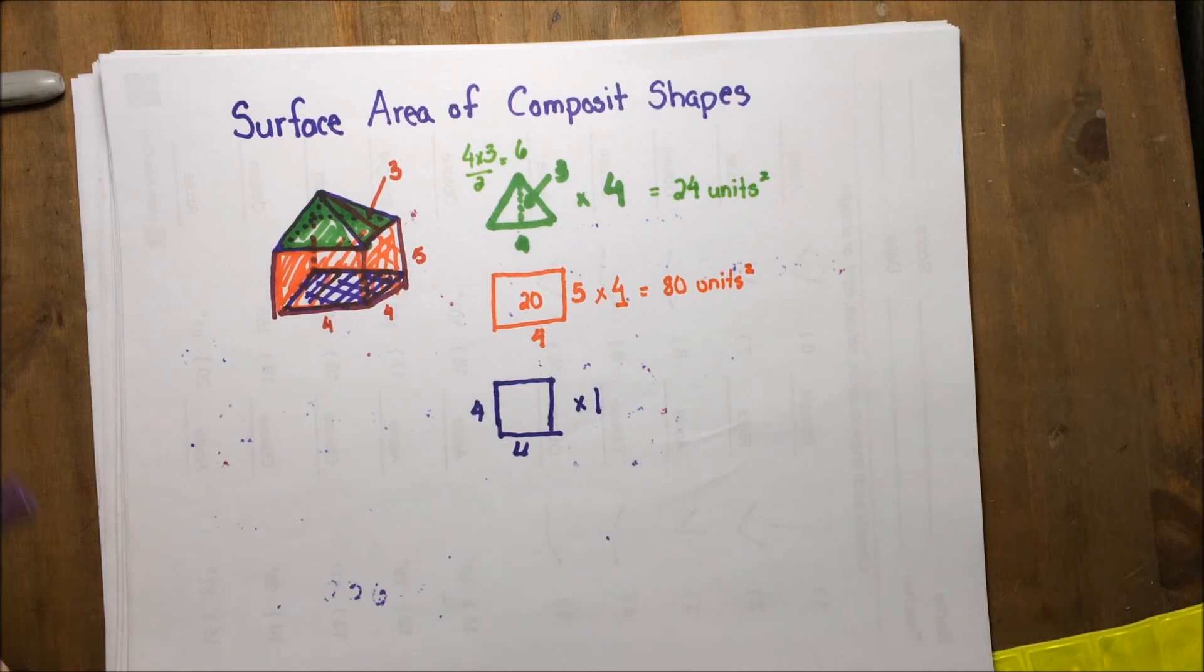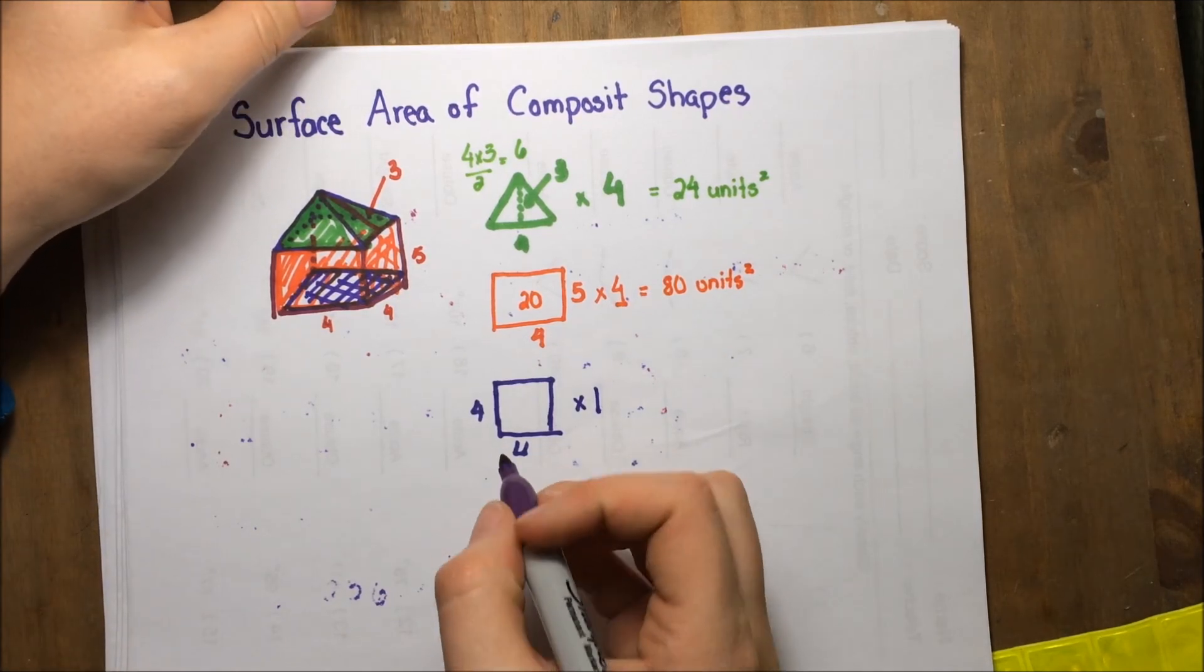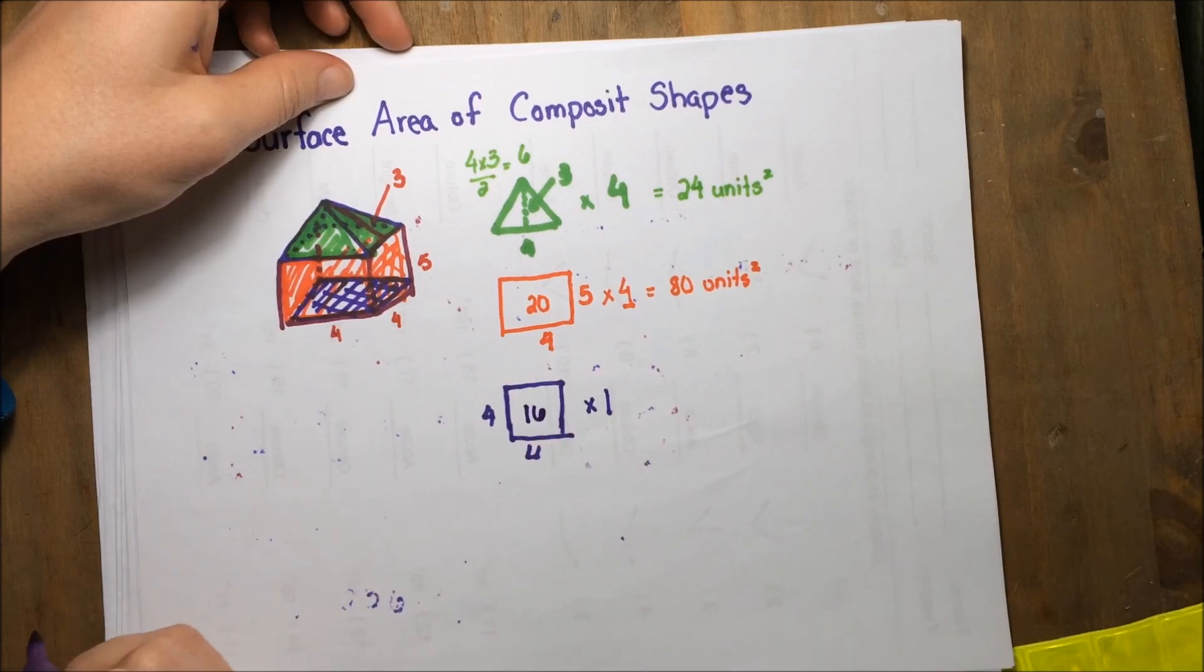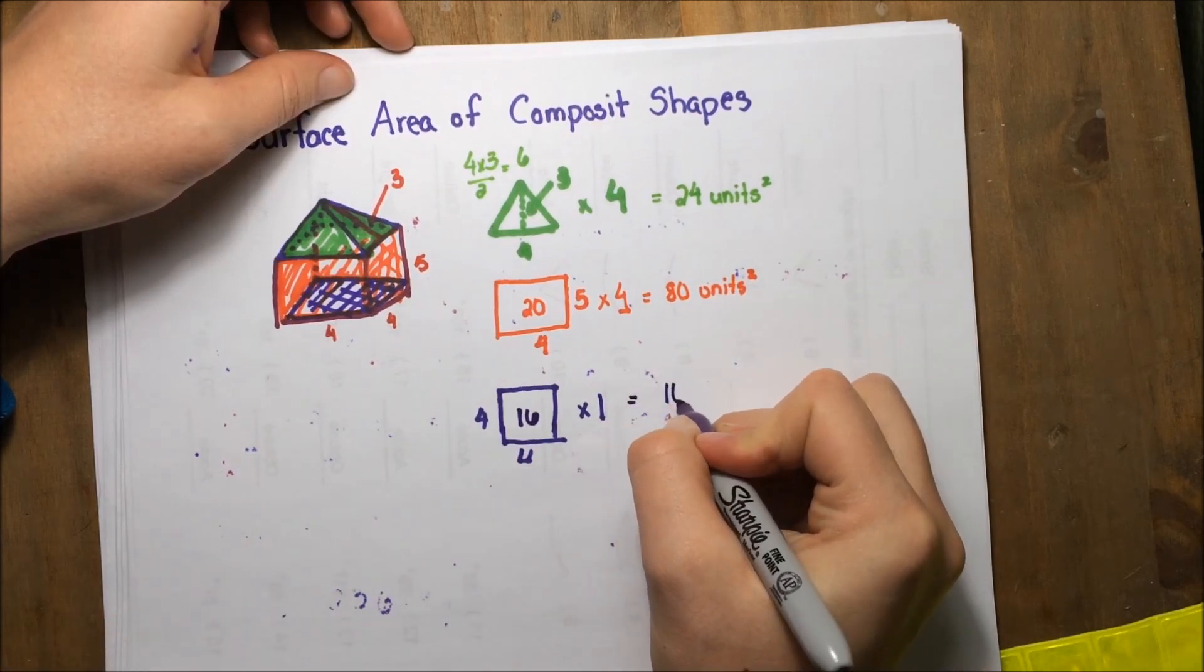Last one is that square. It's a four by four, which is 16 units squared. There's only one of those, so that gives me 16 units squared.